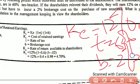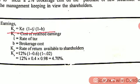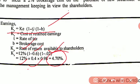The formula is: ke = ke × (1 - t) × (1 - b). Substituting: ke = 12% × (1 - 0.6) × (1 - 0.02) = 12% × 0.4 × 0.98 = 4.7%.